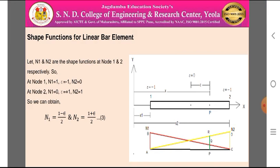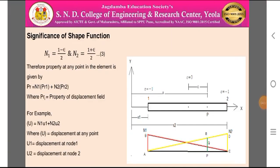As we move from node 1 to node 2, N1 decreases linearly while N2 increases linearly. The significance of the shape functions is expressed using N1 = (1 - ε) / 2 and N2 = (1 + ε) / 2.